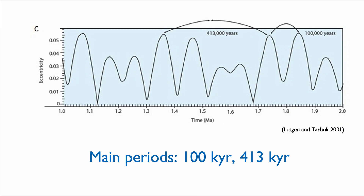In the recent geological past, so in the last 1.8 million years, the Earth has been dominated by a 400,000-year eccentricity cycle. Before that, the 100,000-year cycles dominated. It's still a little unclear why that change occurred, but it had a profound implication on ice ages.